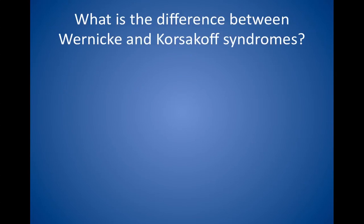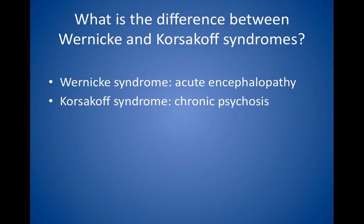What is the difference between Wernicke and Korsakoff syndromes? What causes each? Wernicke syndrome is an acute encephalopathy characterized by ophthalmoplegia, nystagmus, ataxia, and/or confusion. It can be fatal but is often reversible with thiamine. Korsakoff syndrome is a chronic psychosis characterized by anterograde amnesia, the inability to form new memories, and confabulation or lying to cover up the amnesia. Korsakoff syndrome is generally irreversible and is thought to be due to damage to the mammillary bodies and thalamic nuclei. Both conditions result from thiamine deficiency.